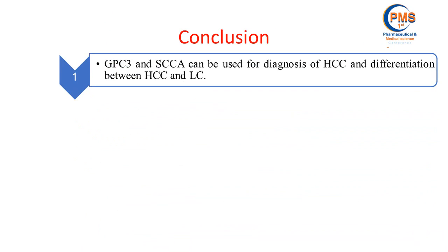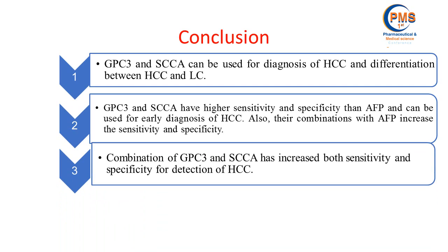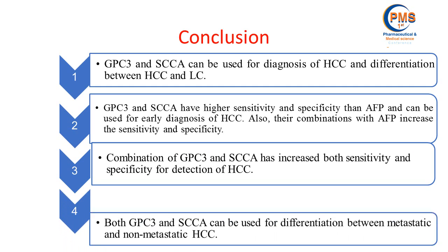In conclusion, Glypican-3 and squamous cell carcinoma antigen can be used for diagnosis of HCC and differentiation between HCC and liver cirrhosis. Glypican-3 and squamous cell carcinoma antigen have higher sensitivity and specificity than alpha-fetoprotein and can be used for early diagnosis of HCC. Combination of Glypican-3 and squamous cell carcinoma antigen increases sensitivity and specificity for detection of hepatocellular carcinoma.